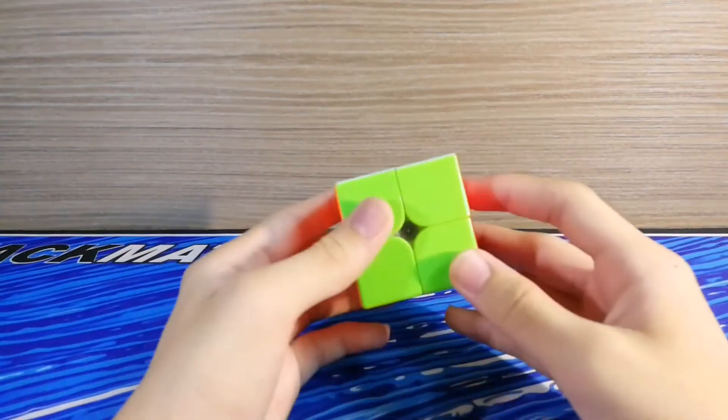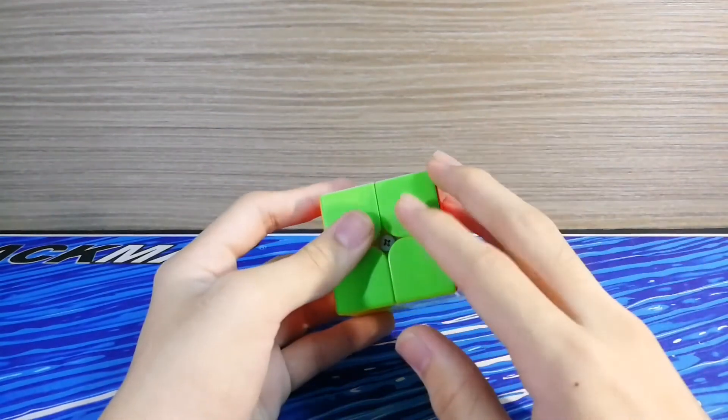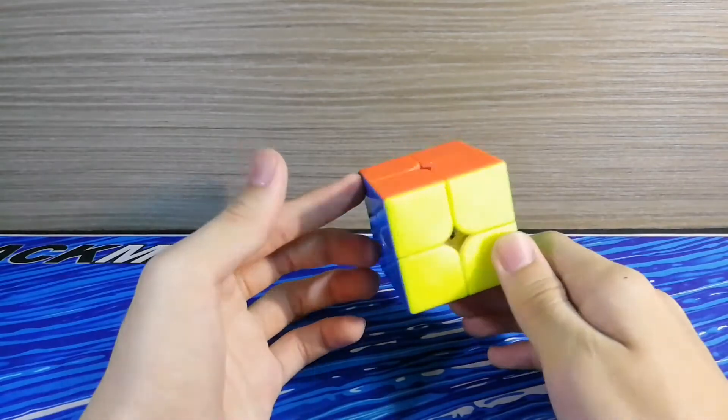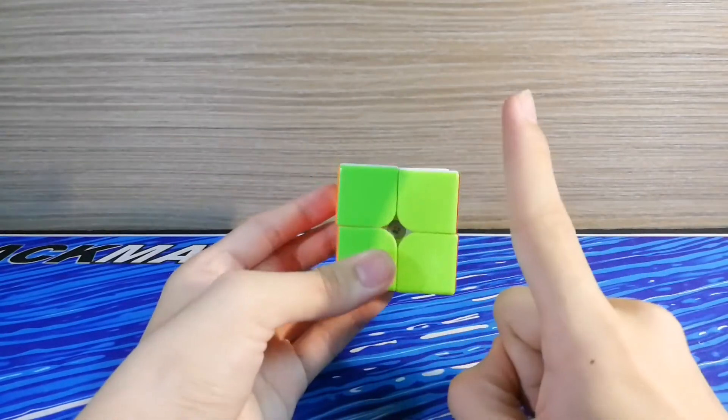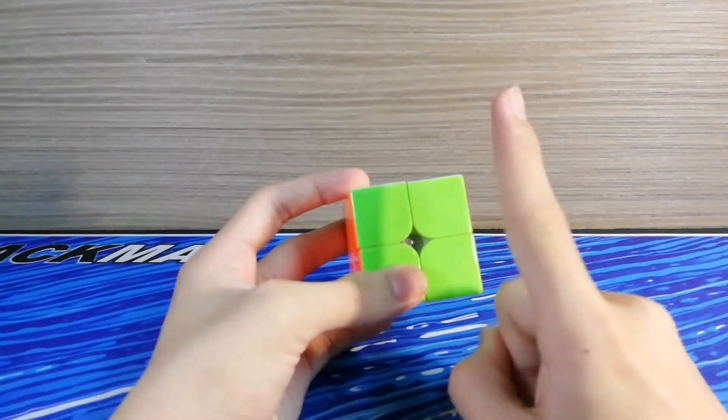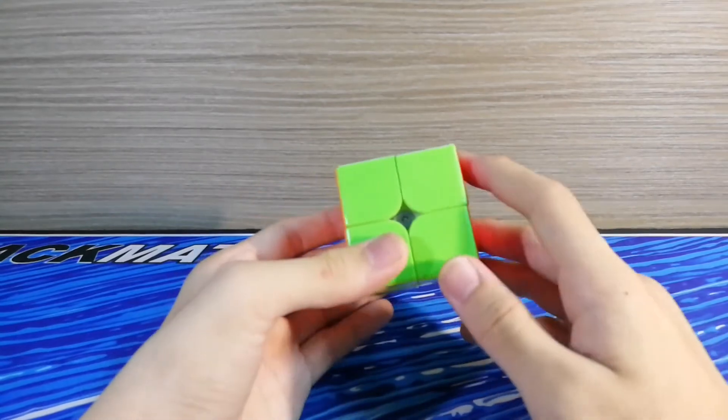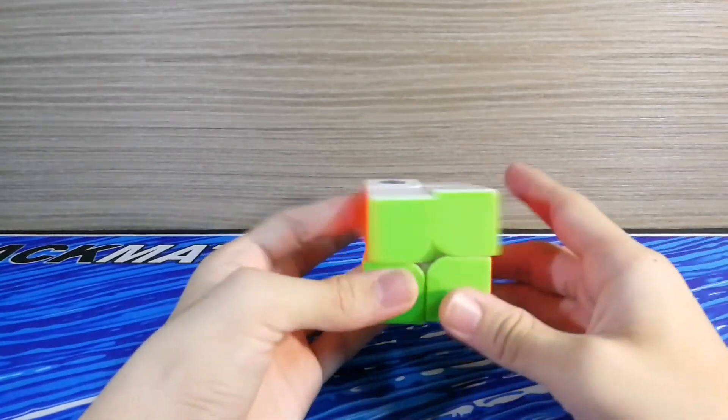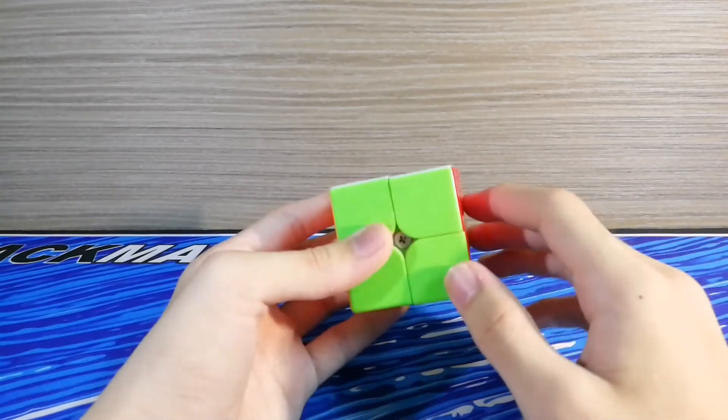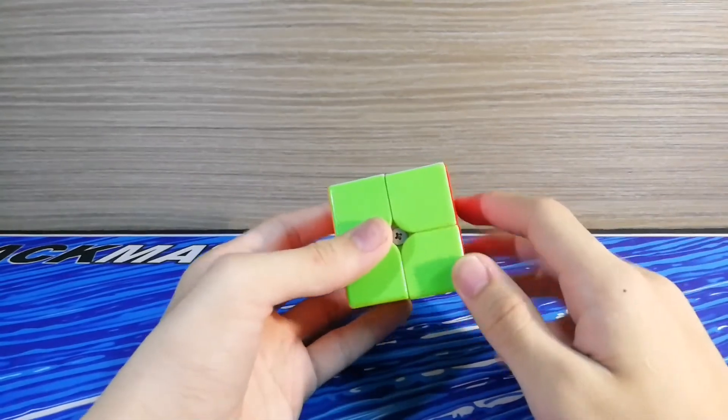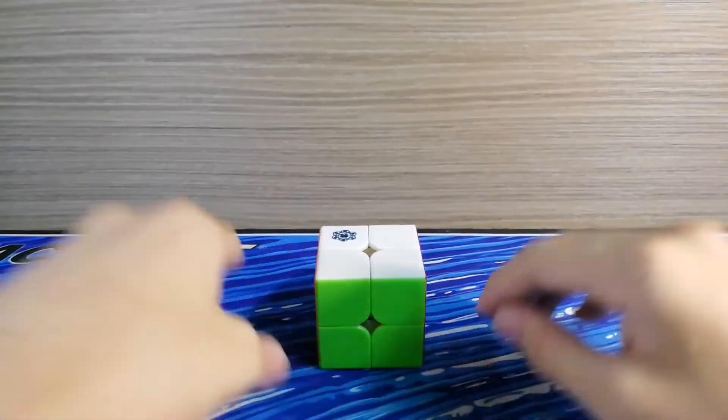So yeah that's about it for this 2x2 Ao5 solve. I know it's kind of short in this video but that's okay. So I've already done 2x2 Ao5 solve. If you really want to do what event you want me to do, please leave a comment down below like the guide before. Make sure to give a like on this video and subscribe to my channel. Hope you guys enjoyed this 2x2 Ao5 solve video and I'll see you next time. Bye.